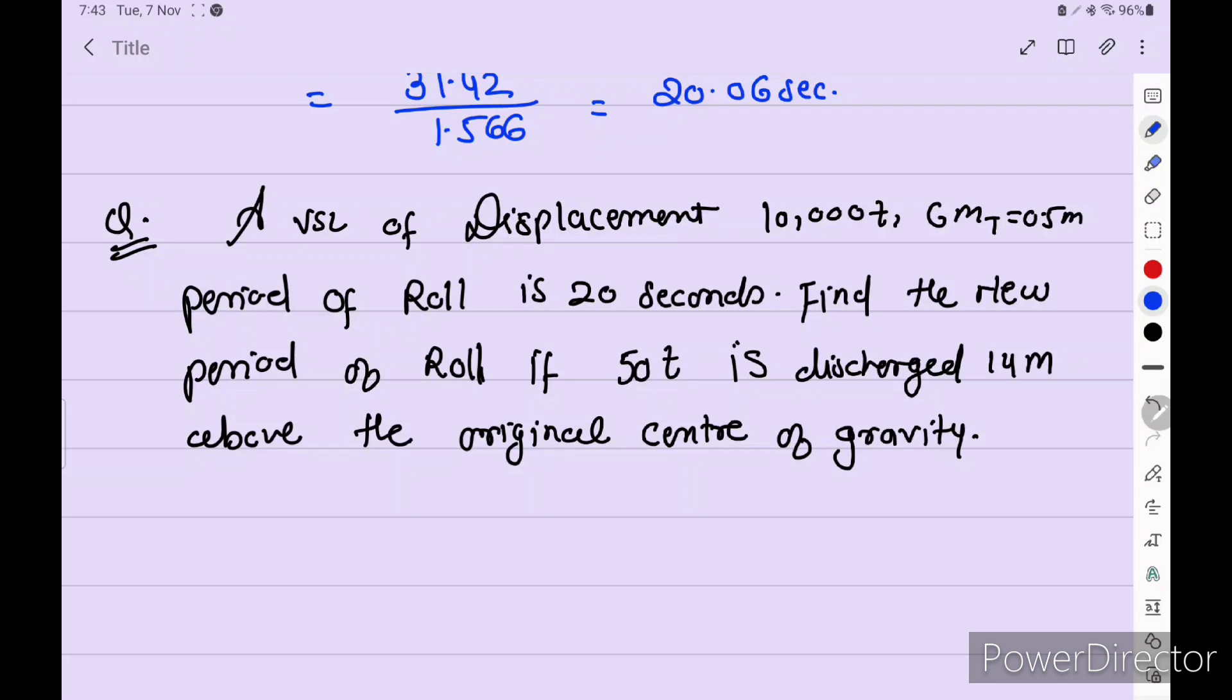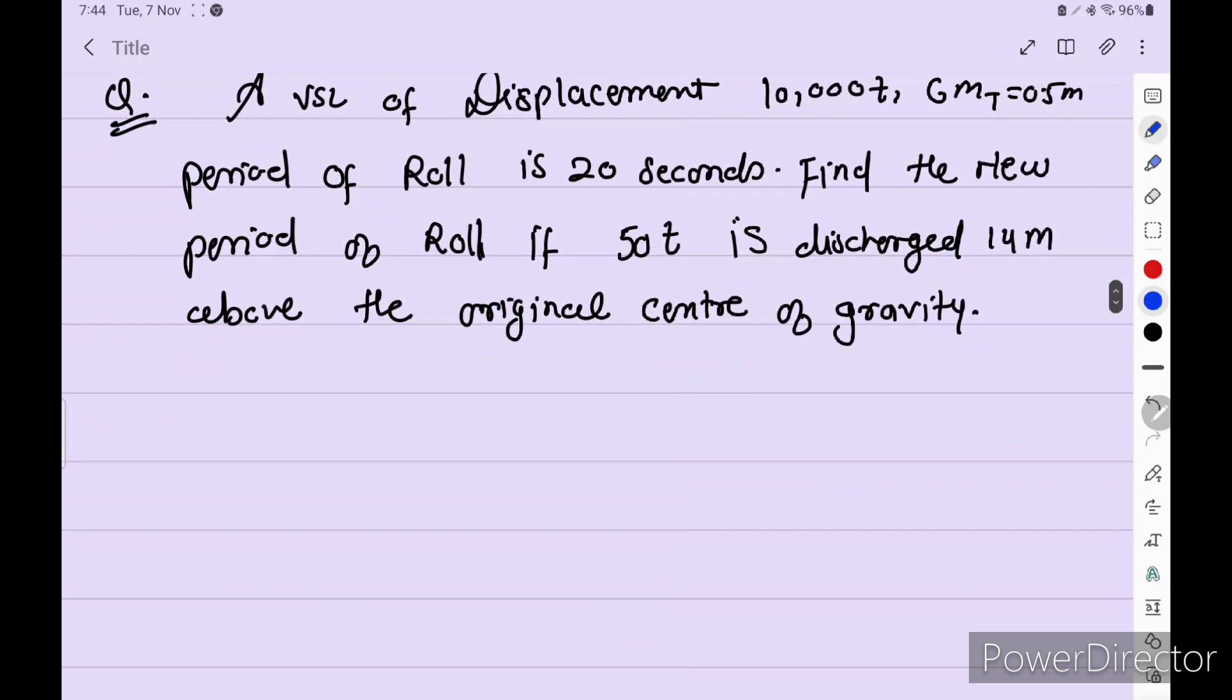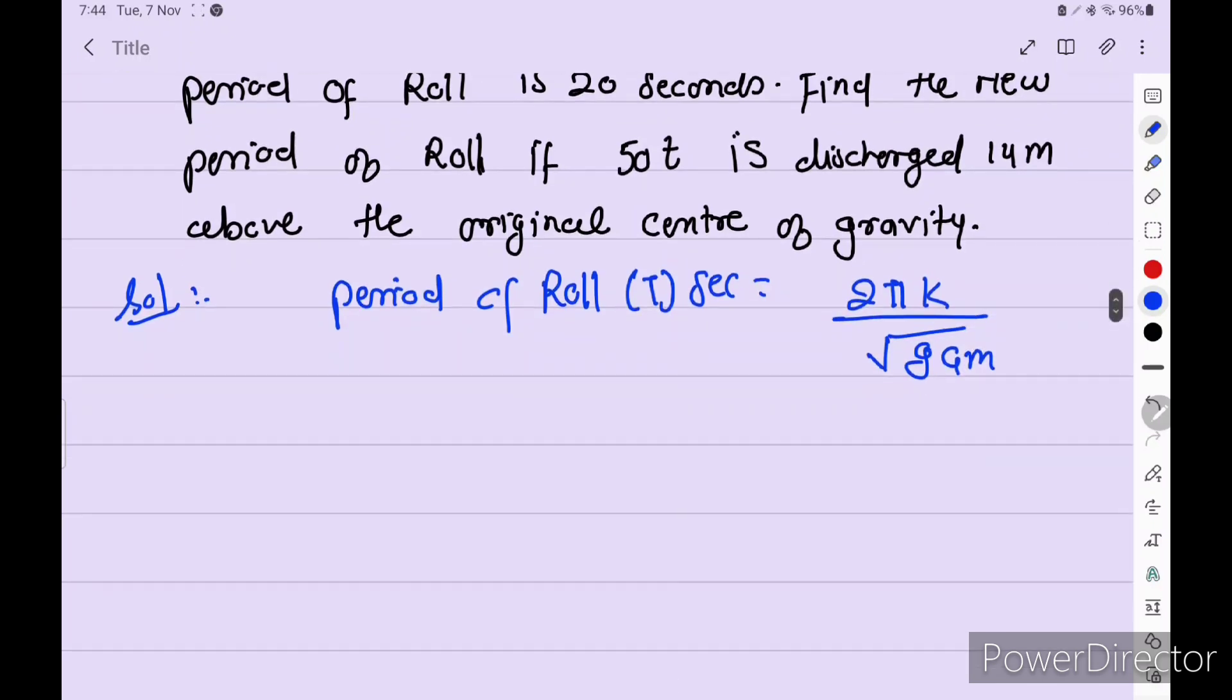A vessel of displacement 10,000 ton, GM 0.5 meters, period of roll is 20 seconds. Find the new period of roll if 50 ton is discharged 14 meters above the original center of gravity. This will be solved in two parts. Period of roll T seconds equals 2πk divided by under root g into GM. Put the values. Period of roll is 20 seconds. 2 into 3.142 into k, we don't know, we have to find k first.